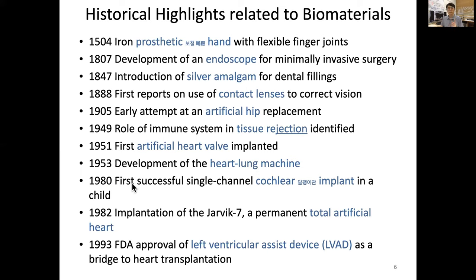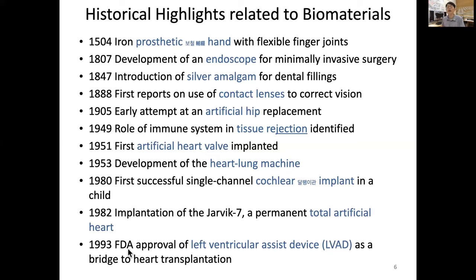In 1980, the first successful single-channel cochlear implant was used in a child. The cochlear implant is an artificial ear replacement — that was only single channel, whereas nowadays we have 8 or even 24 channels available. In 1982, a permanent total artificial heart was implanted, though it wasn't very successful at the beginning and the total artificial heart still cannot be considered truly permanent. In 1993, the U.S. FDA approved the first left ventricular assist device, used as a bridge to total heart transplantation.